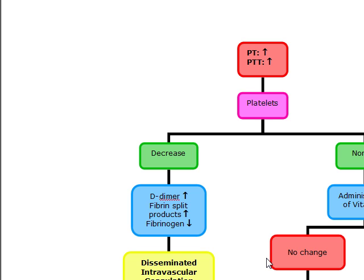Because most patients present with DIC with severe bleeding, you're going to use fresh frozen plasma. And occasionally you can use platelet transfusions, but FFP is going to be your answer for the most part.